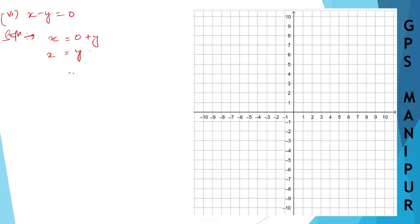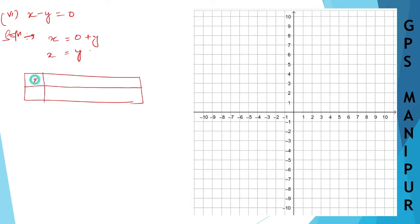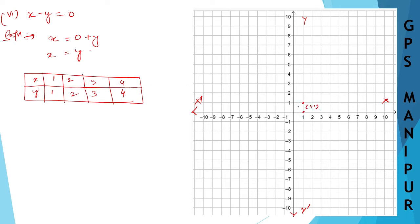Let us draw the table for this one. This is x, this is y. When x is 1, y is also 1. When x is 2, y is also 2. When x is 3, y is also 3. Whatever x is, y is the same — x and y are equal. So points are (1,1), (2,2), and (3,3).